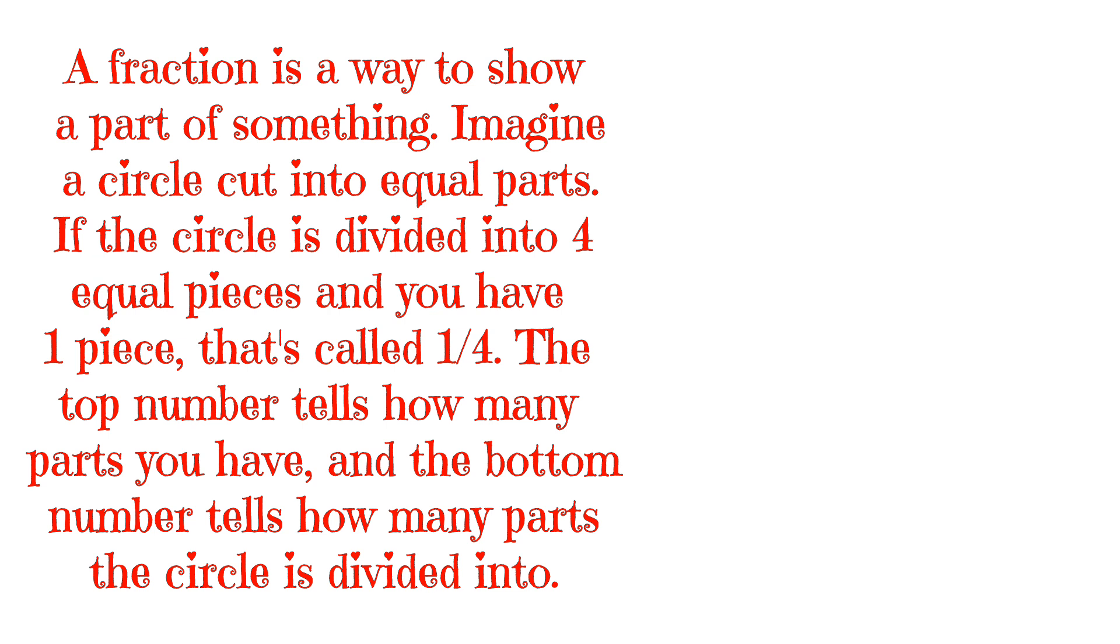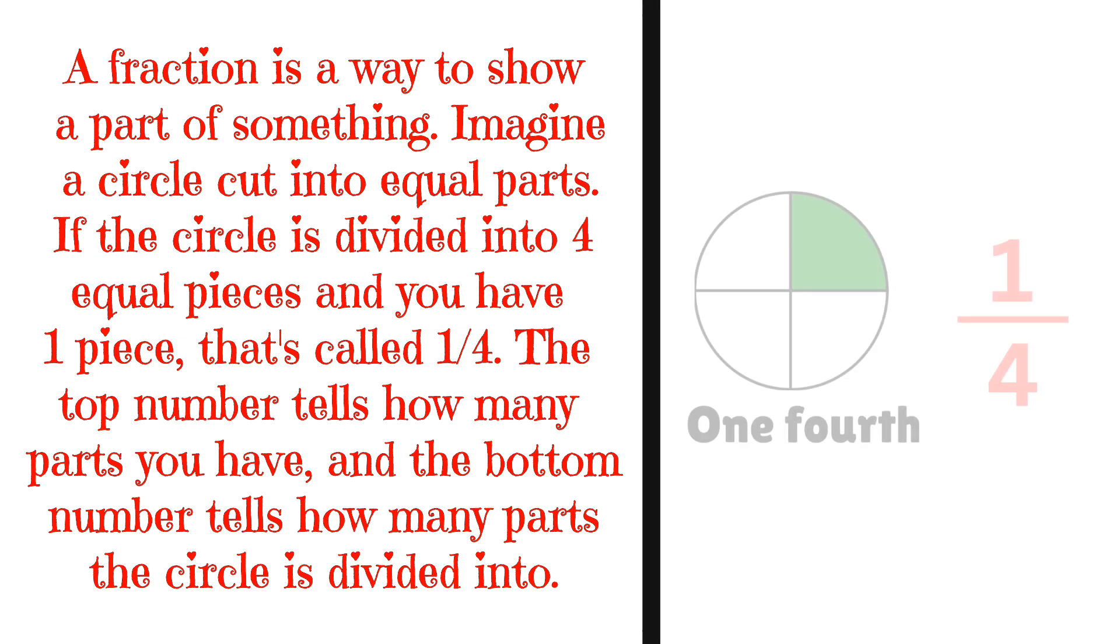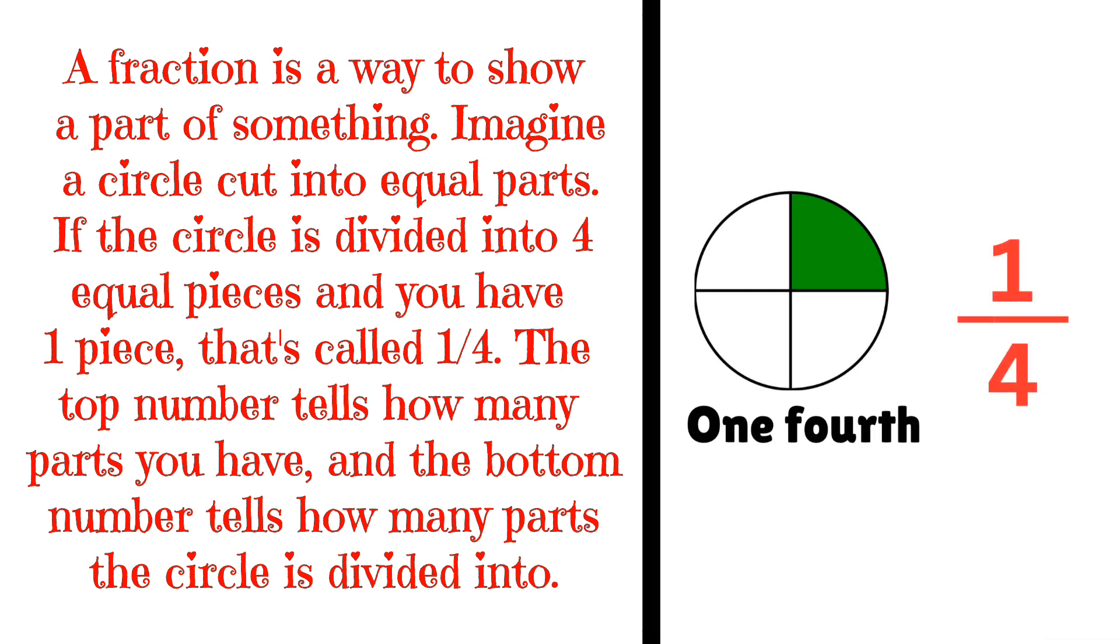If a circle is divided into four equal pieces and you have one piece, that's called one-fourth. The top number tells how many parts you have, and the bottom number tells how many parts the circle is divided into.